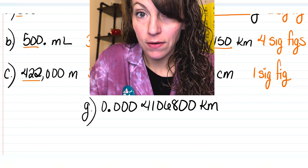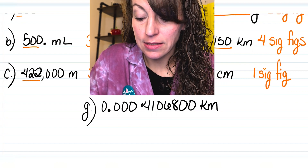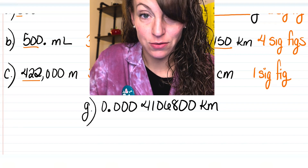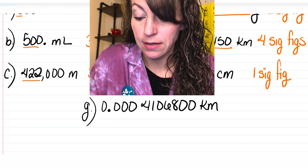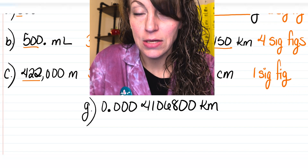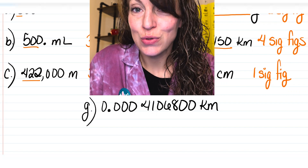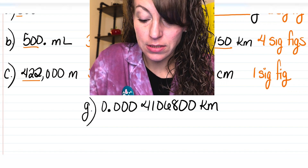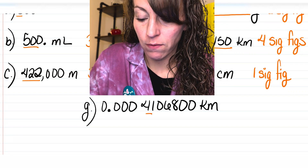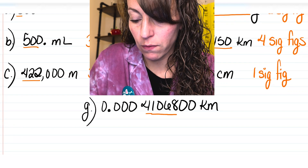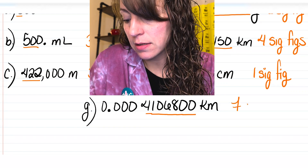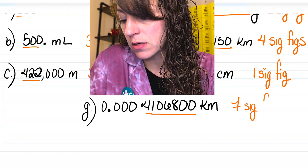Our first significant digit is that four. We have a trapped zero here, so that's also significant. And then we have two trailing zeros at the end. Those two trailing zeros, since there's a decimal point, are significant. So we have one, two, three, four, five, six, seven significant figures in this final measurement.